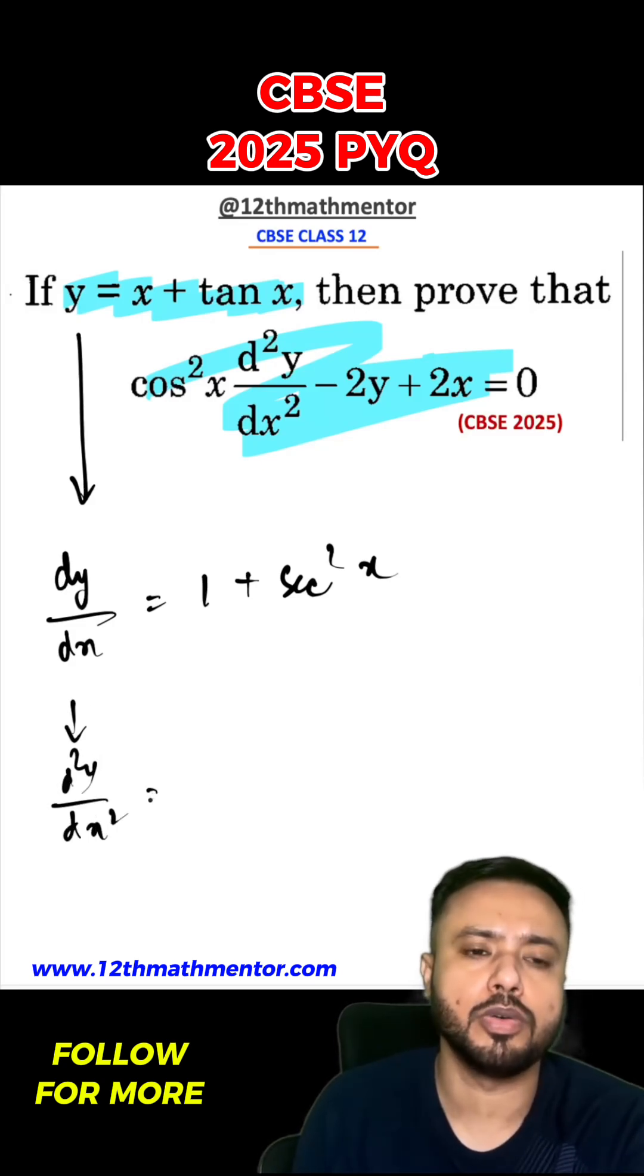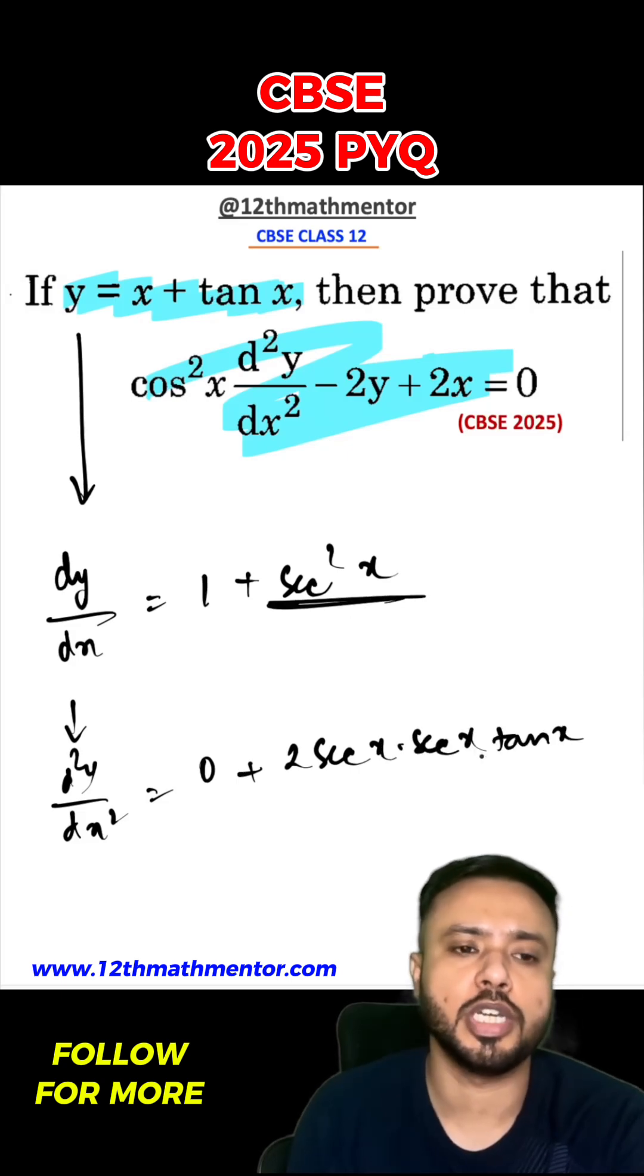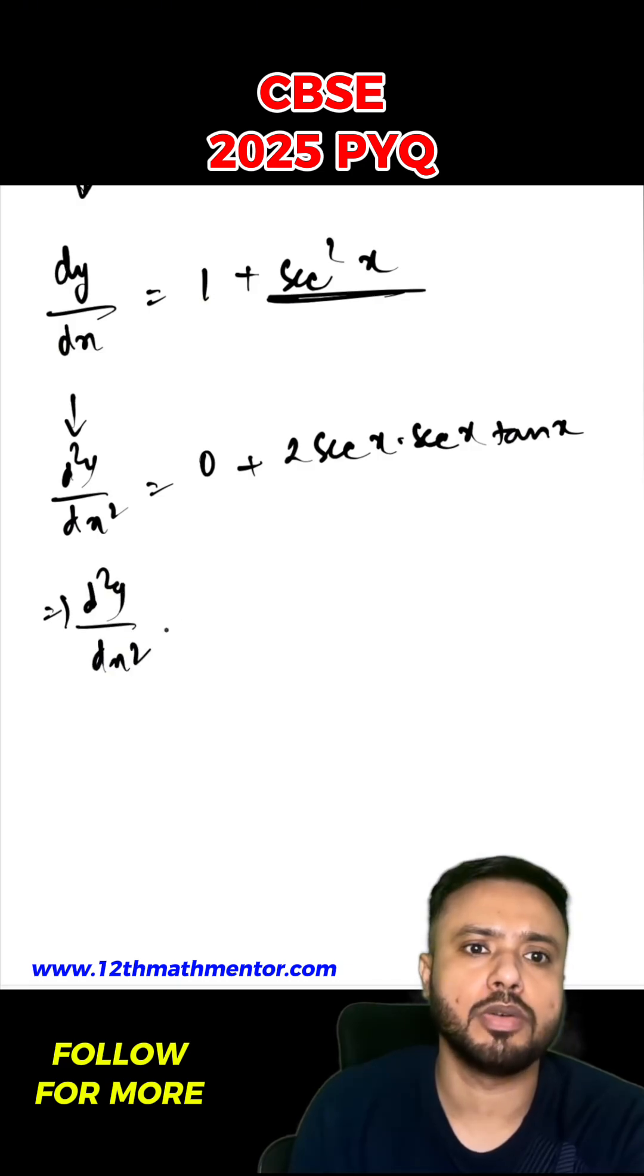So d²y/dx² would be equal to 0 plus 2 sec x into sec x tan x. To differentiate this sec²x, I've used chain rule here. So I can say that d²y/dx² would be equal to 2 sec²x into tan x.